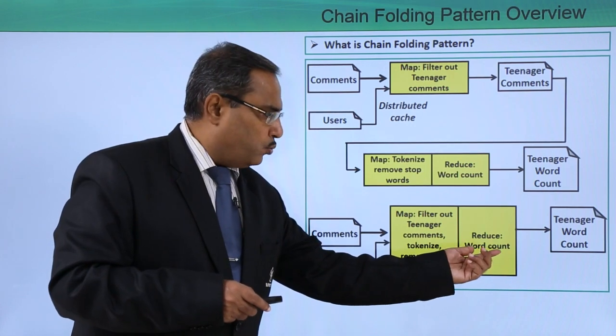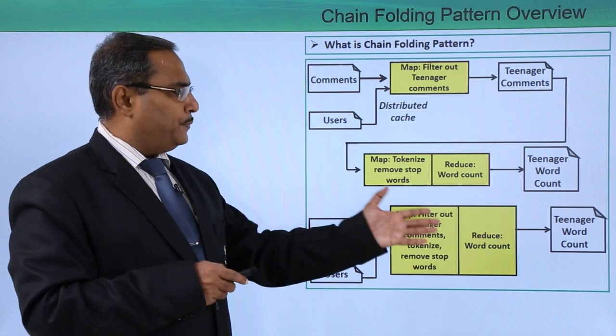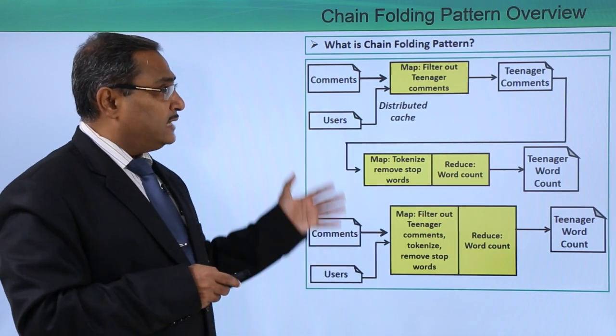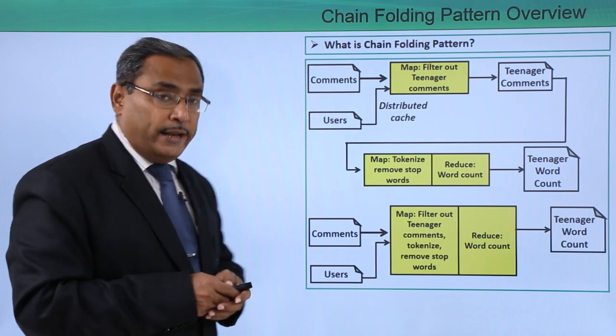The reducer will do the word count and the final teenager word count will be obtained. This is the basic concept and in this diagram, we have explained what is chain folding pattern.